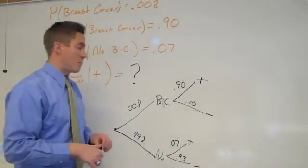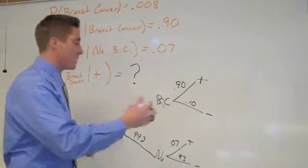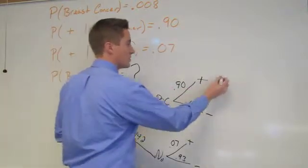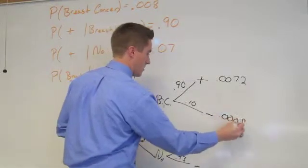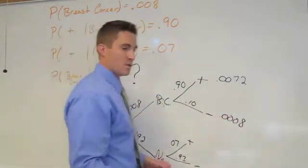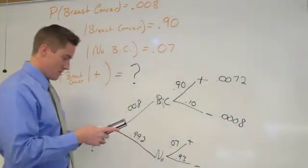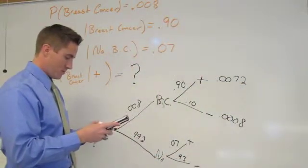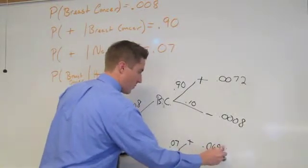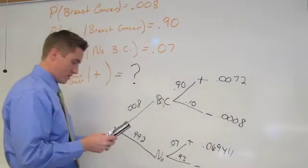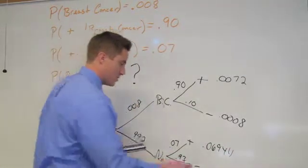Let's go ahead and multiply these all out like we do with our regular tree diagrams. When we do this, this would be 0.0072, this would be 0.0008, and these ones I gotta use my calculator. 0.992 times 0.07 is 0.0694944, and this last one is 0.92256.